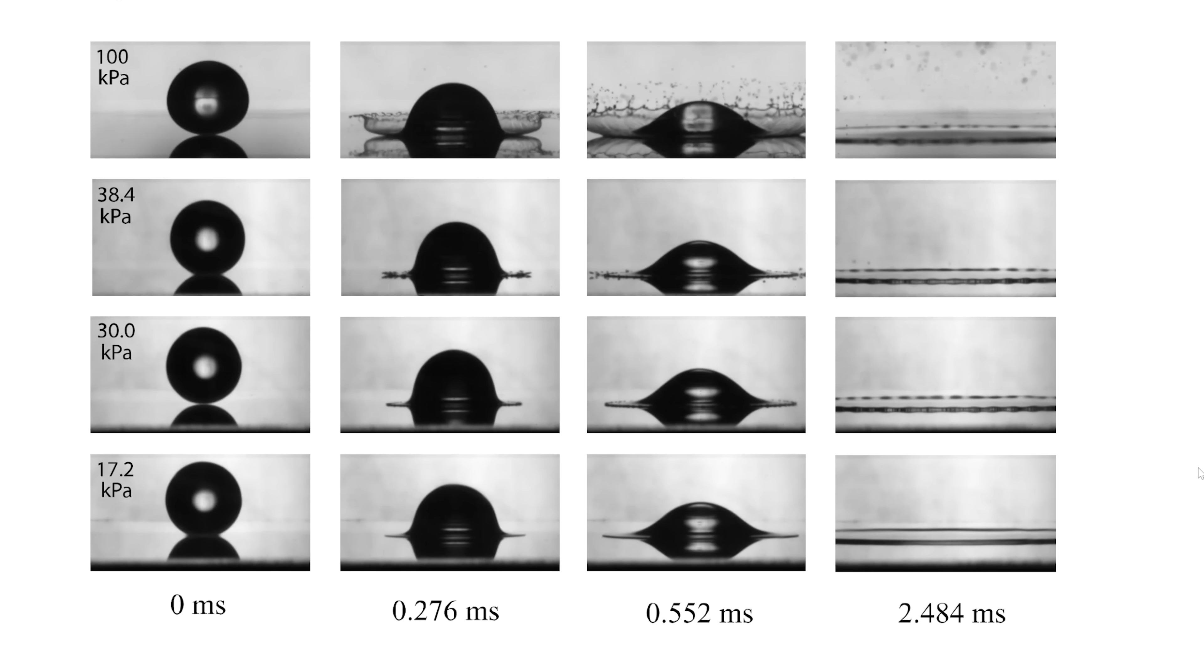In the author's later experiments they dropped the drops from up to three meters high in a vacuum and they still didn't splash. What's crazy is that there's almost a transition point to when there's little enough air for no splashing to occur.